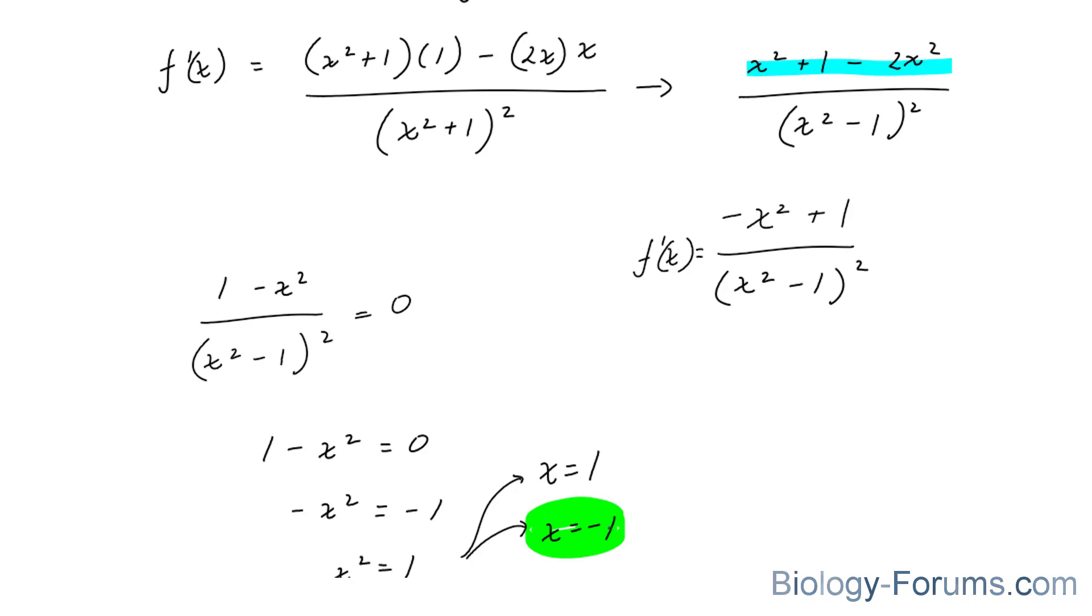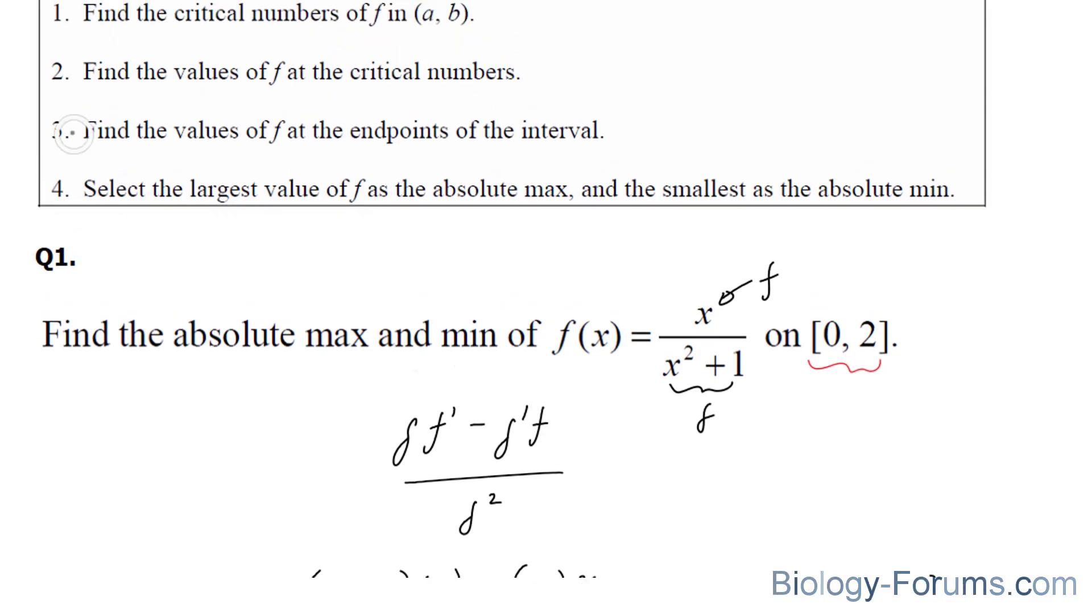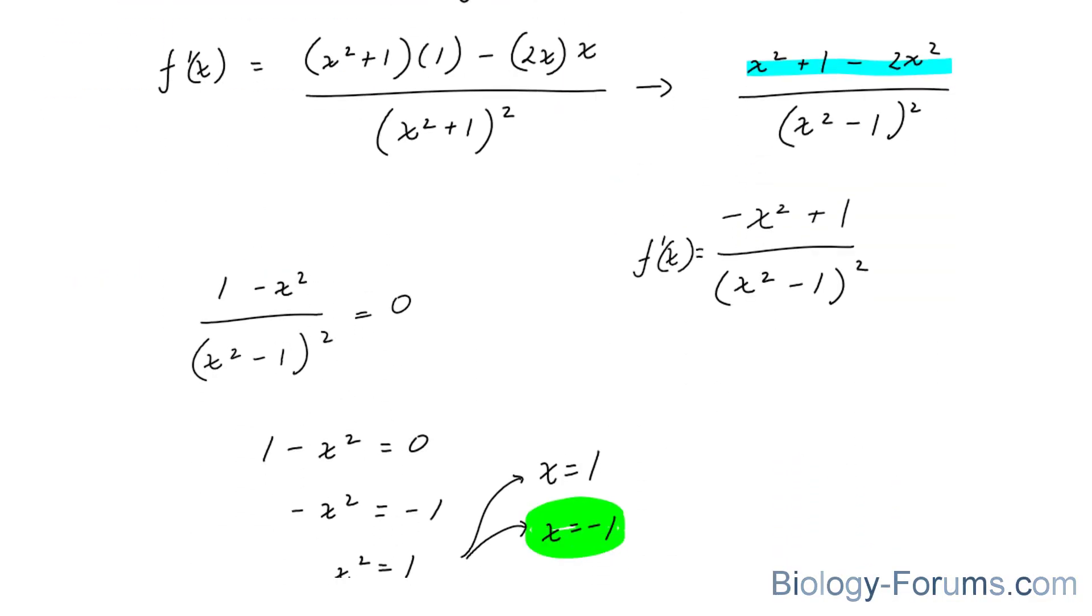So, we have three important values that we need to evaluate our original function. We are on this step right here. And they told us what happens at x is equal to 0, x is equal to 2, and now at x is equal to 1. And you're going to evaluate f at each of these. And you're going to pick the one that is the highest and the one that is lowest to be your maximum and minimum, respectively.